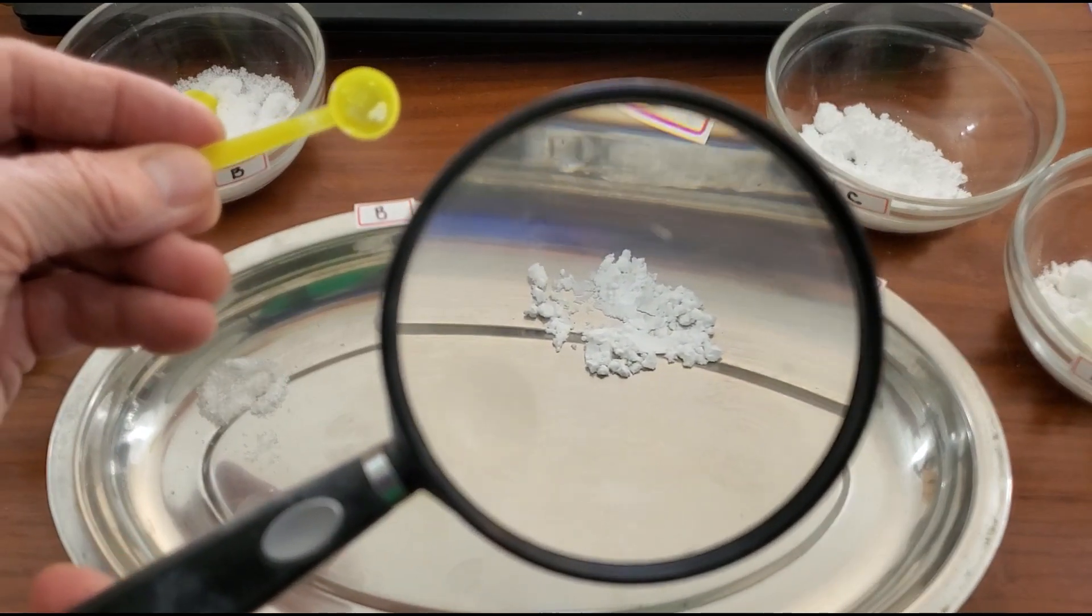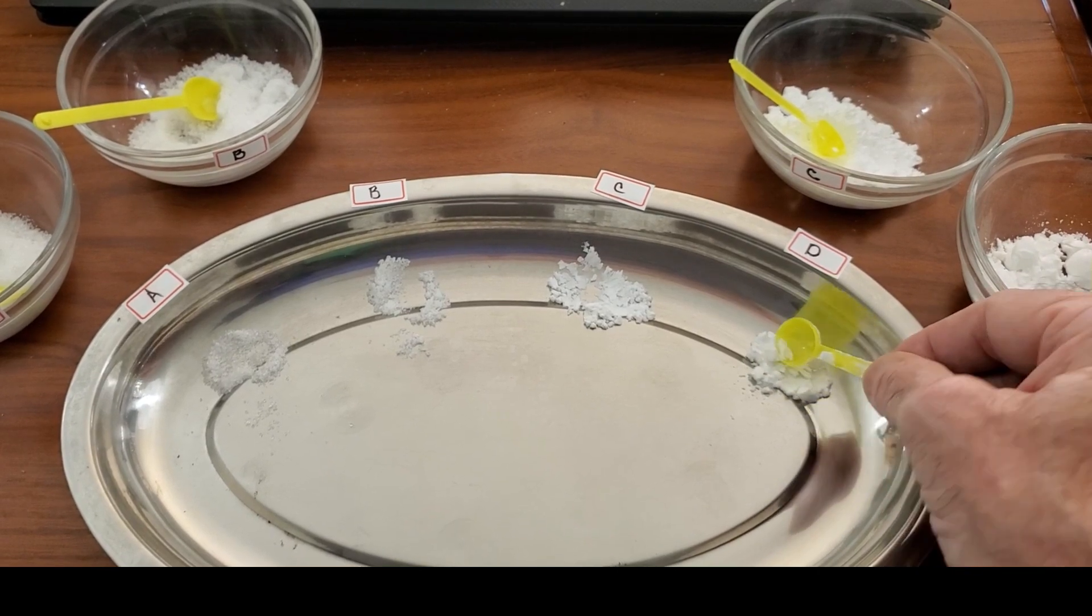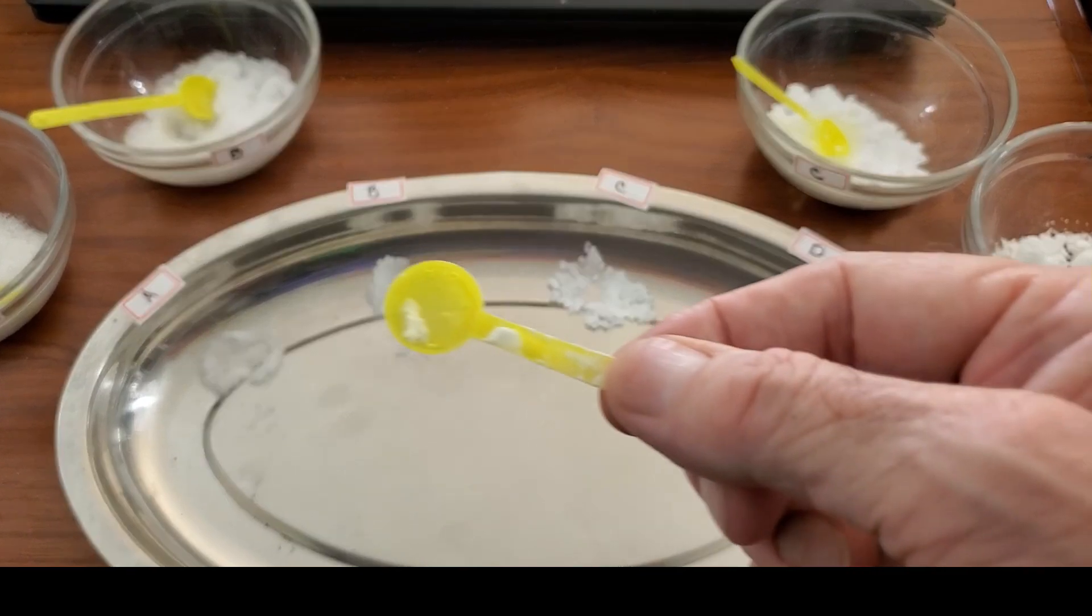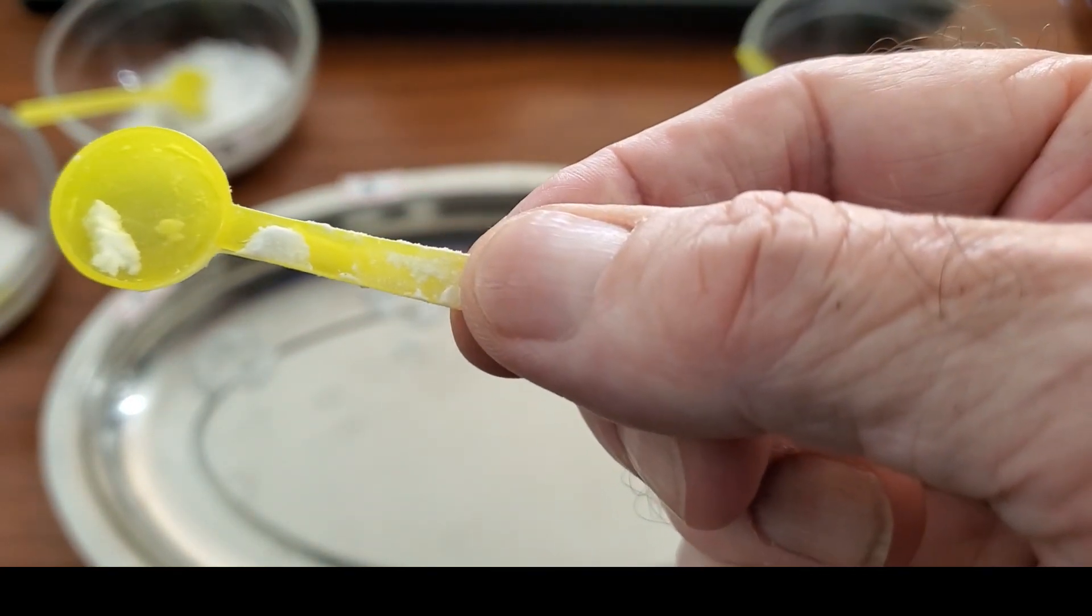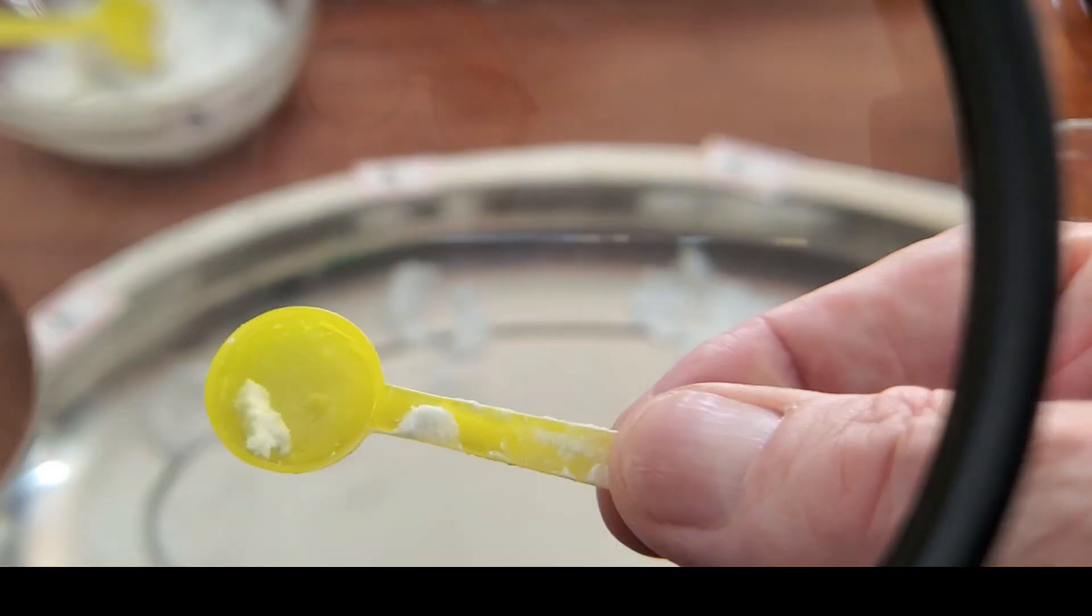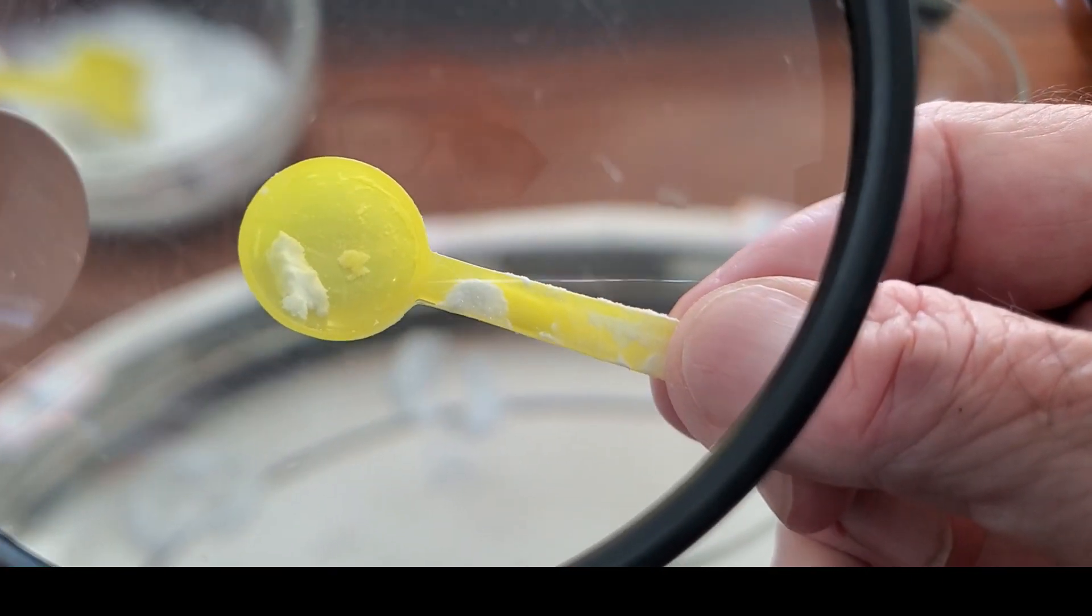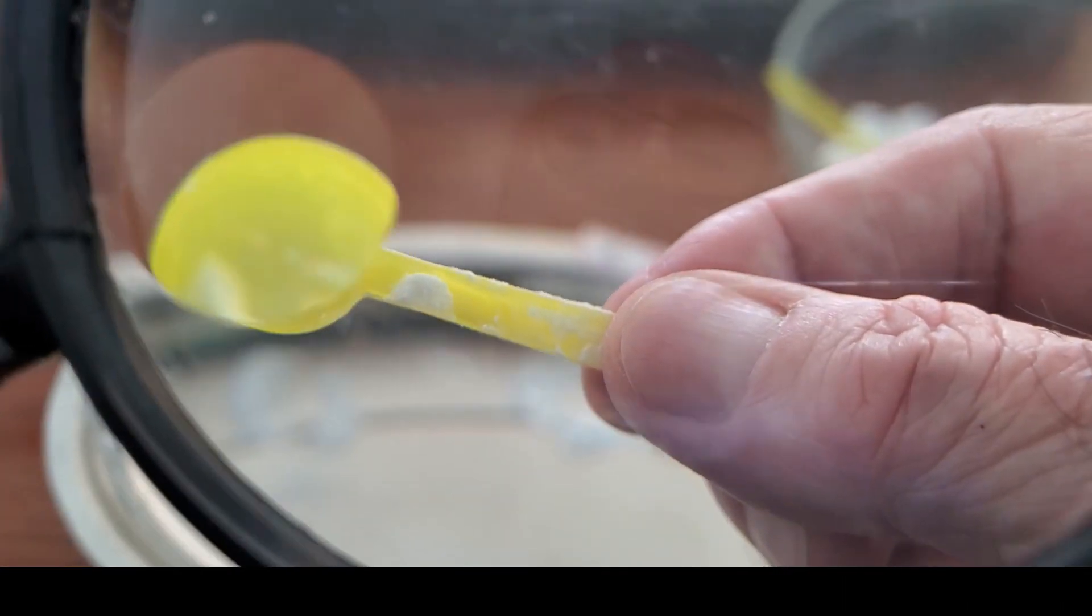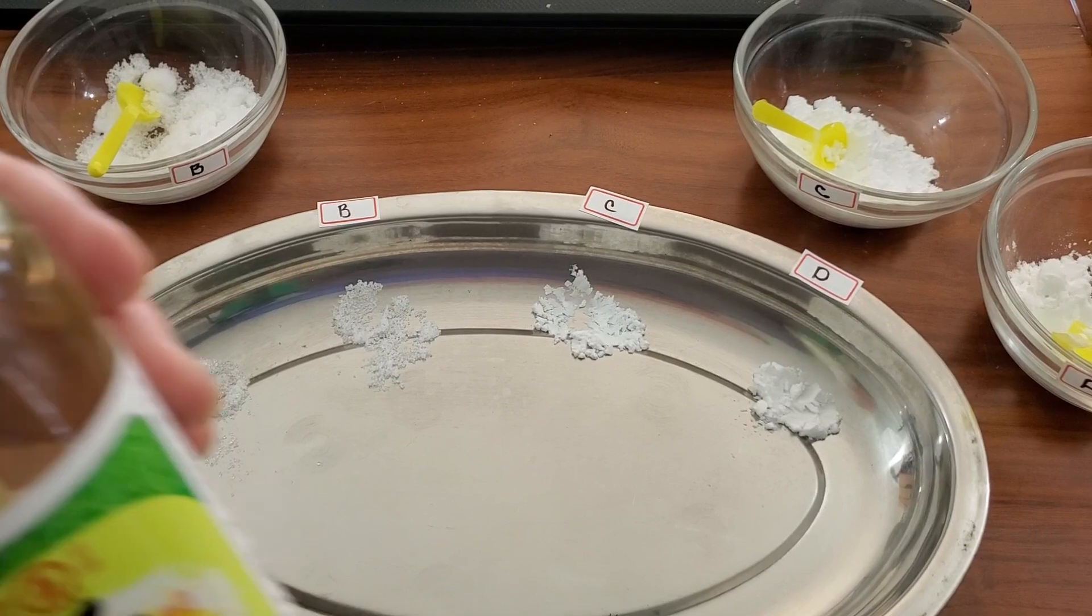And A and B are crystallized, kind of different than C and D. C and D are very smooth. I have the students draw a picture on their worksheet and it's hard to draw a picture of a smooth. So I tell them, use a shape like a circle. For the crystals, I would make one a triangle and one a square.